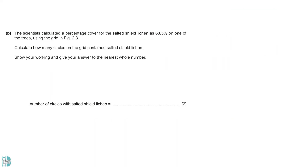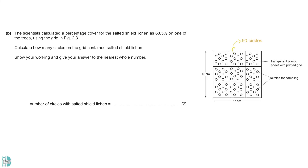Part B: Calculate how many circles on the grid contain salted-shield lichen. There are 90 circles in the grid. 63.3% of 90 gives 57 circles.